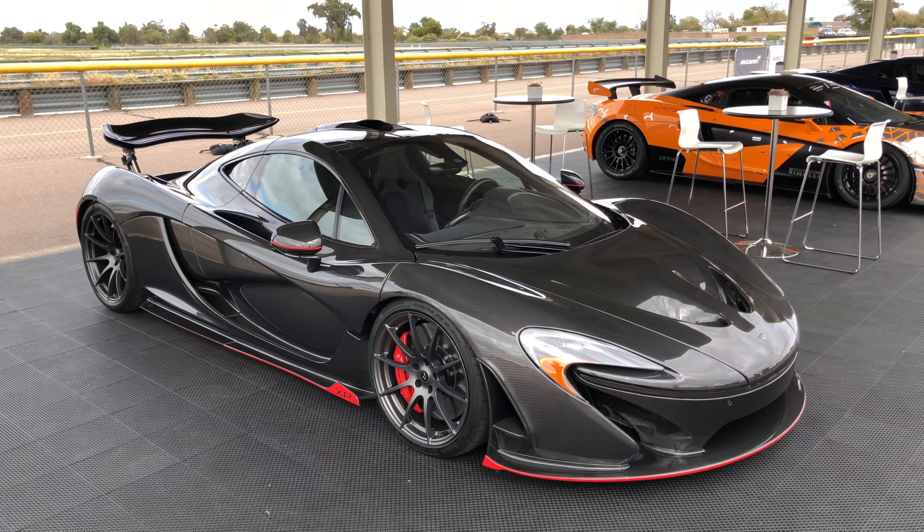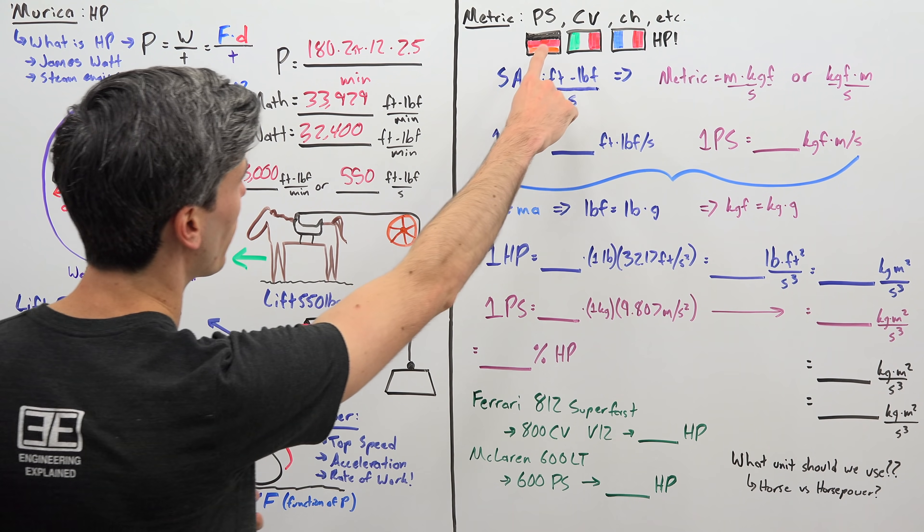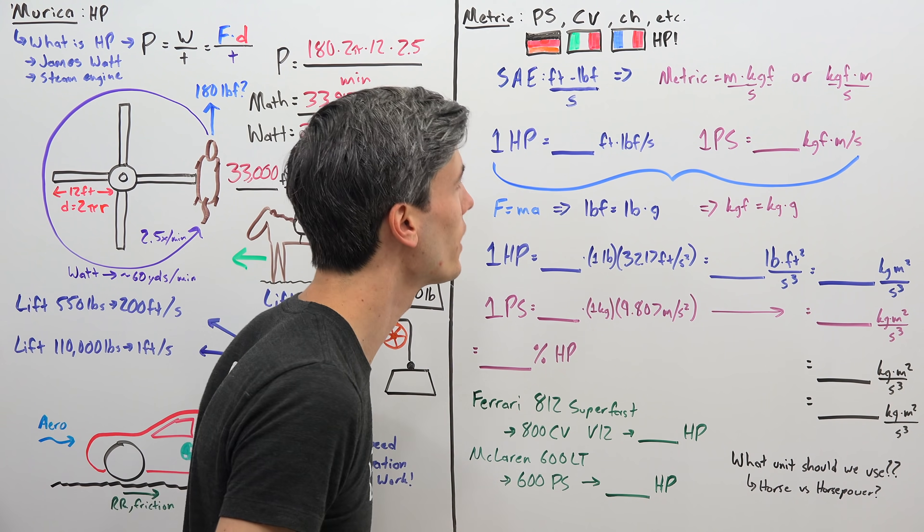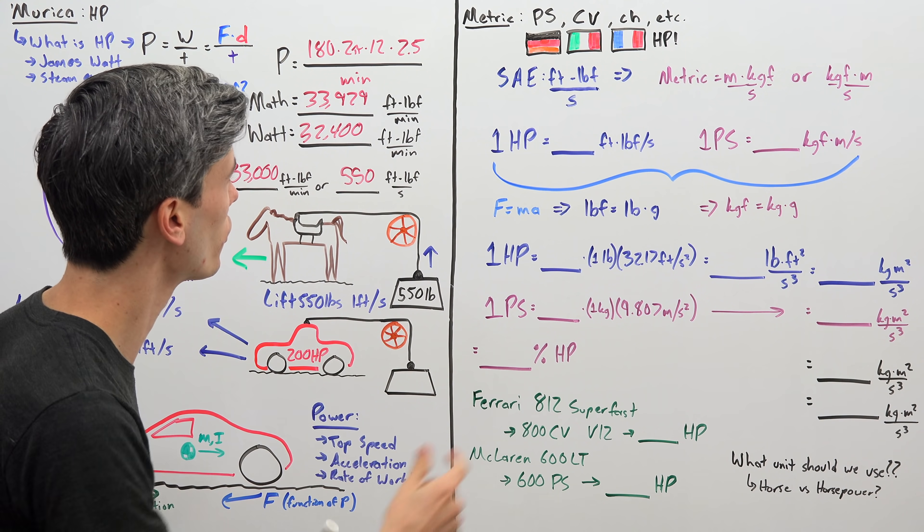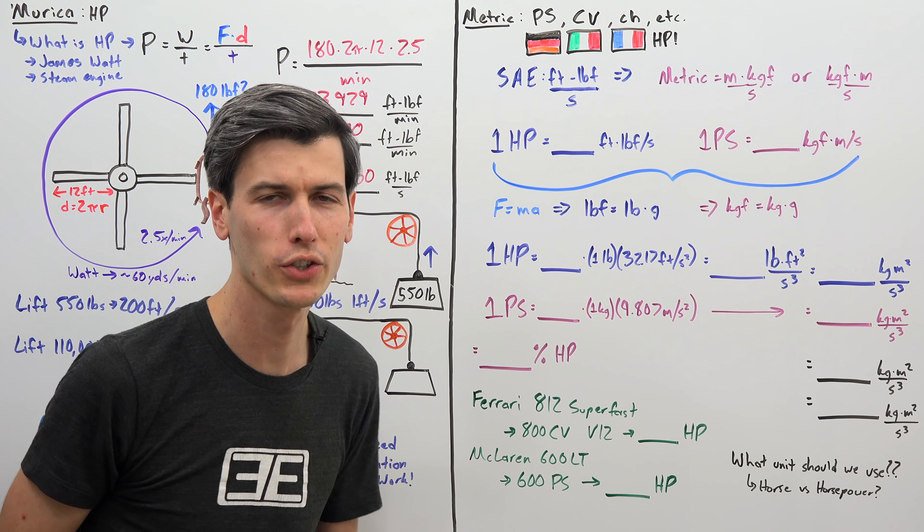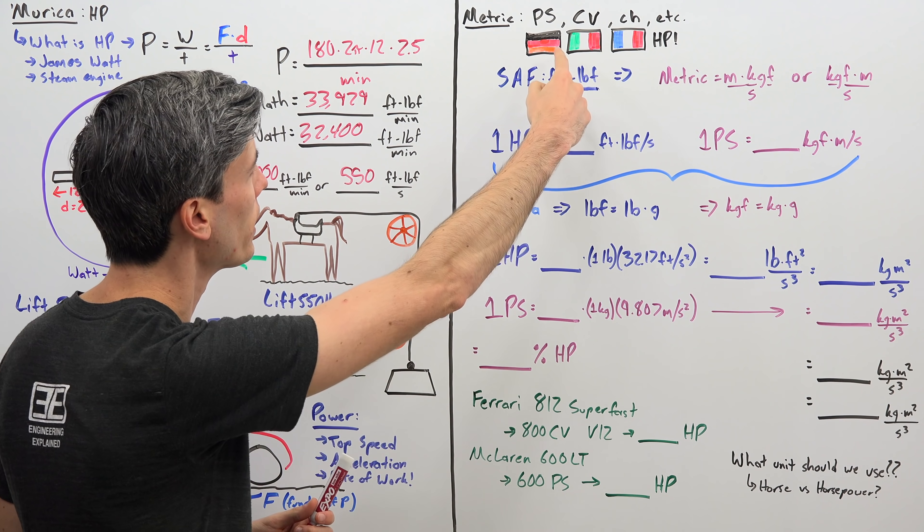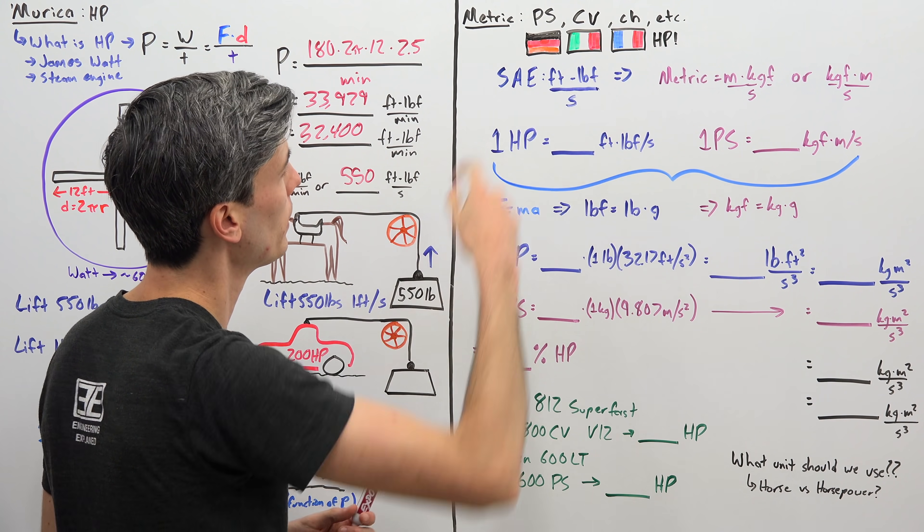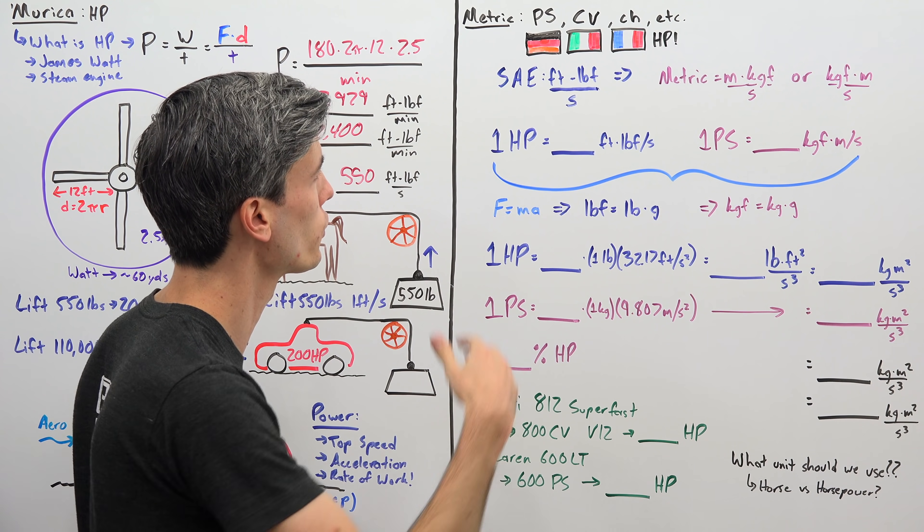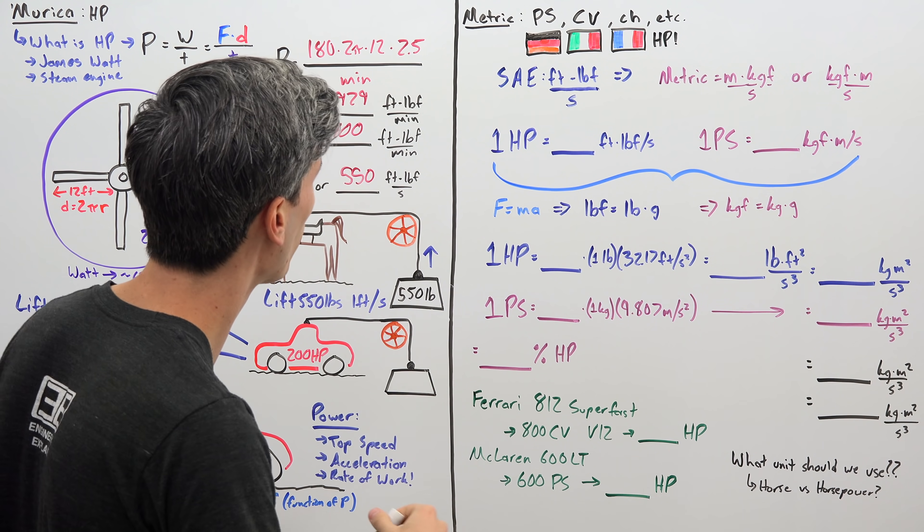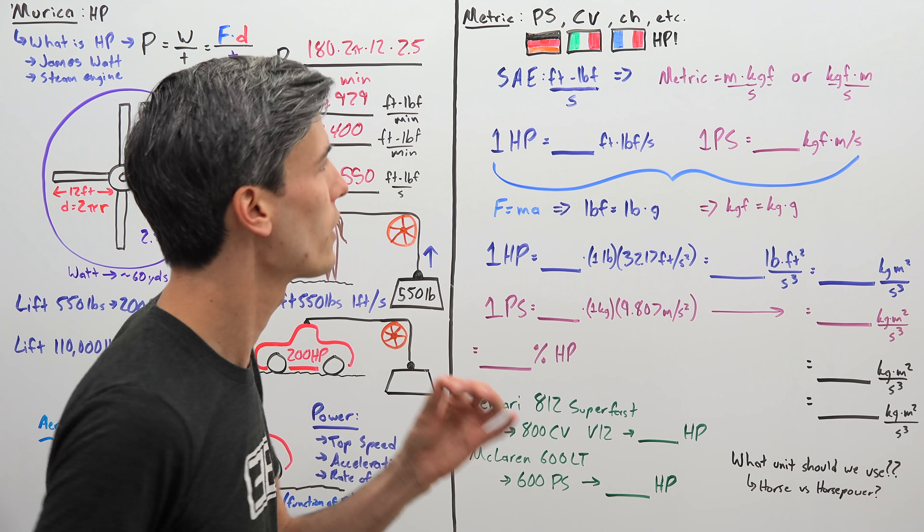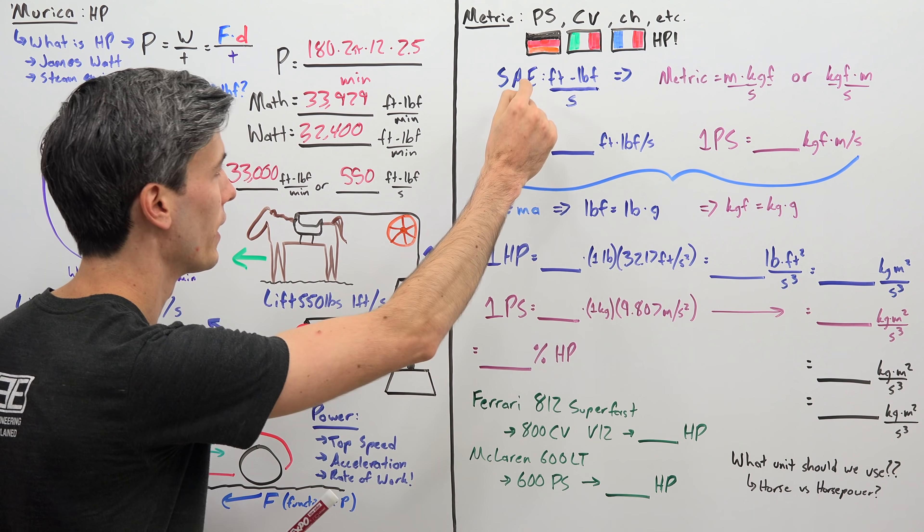Okay so what is metric horsepower? You may see this written as PS, CV, CH, other abbreviations. So all of these are simply abbreviations for the words horse and power in different languages. PS being German, CV being Italian, CH being French, and so on. There's many different ones out there but they all represent metric horsepower.